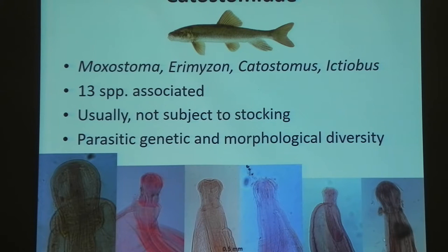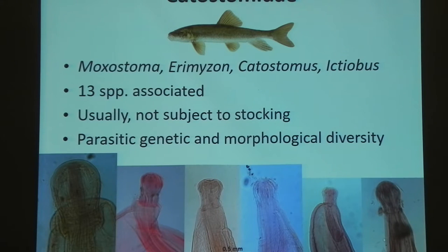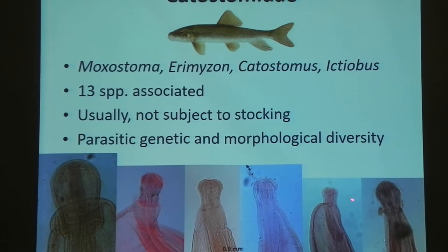An interesting thing is that Catostomids are usually not subject to human stocking. As mentioned, nobody really cares about white suckers — we go to collect them and people are like, 'yeah, take as many as you want.' This makes it kind of fun for us because we get to look at fish populations — and by way of that, their parasite populations — that have been able to diverge without much human influence for evolutionary time. You can see all of these worm proboscis images I took from our scope are all on the same size scale, so you can see that one is very, very large compared to the others — just showing the morphological diversity in the specimens we have.